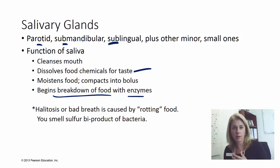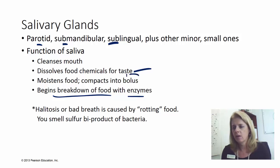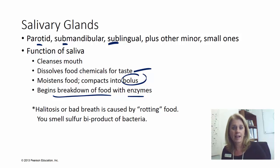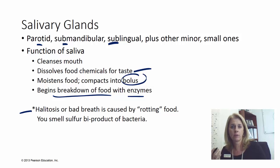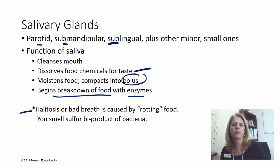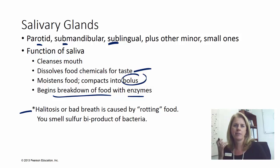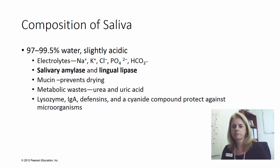That big mass of food you swallow, after you've chewed it and mixed it with saliva, is called a bolus. If you have bad breath, we call that halitosis, and it's really just due to rotting food. Bacteria in your mouth start to digest the food themselves, and their byproduct is a sulfur compound — that's why bad breath smells like sulfur. So floss your teeth, because food caught in your teeth will rot and smell like rotten eggs.